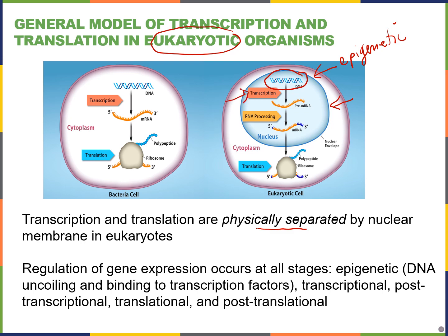Regulation can also occur at the post-transcriptional level, during RNA processing from pre-messenger RNA to mRNA — where we splice out introns and add a five-prime G cap and a poly-A tail to the three-prime end. Gene expression regulation can also occur during translation, or even after translation, which we call post-translational regulation.